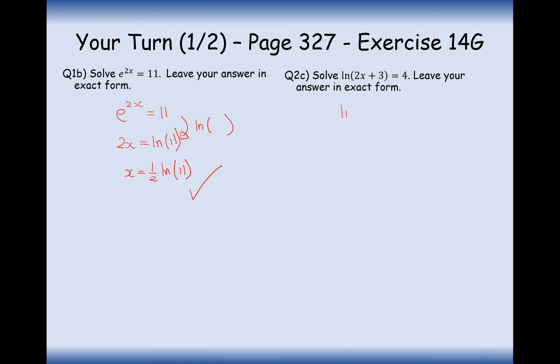Question 2c involves ln of 2x plus 3 equals 4. So we can't get rid of anything inside the brackets. Now we have to undo the ln. And what's the inverse operation of ln? Well, it's e-ing both sides. So it's 2x plus 3 because the e will cancel out the ln. And then it's e to the power of 4. Then we need to subtract 3. So it's e to the 4 take away 3 and divide through by 2 and we get e to the 4 minus 3 over 2. So that's the final answer to question 2c.